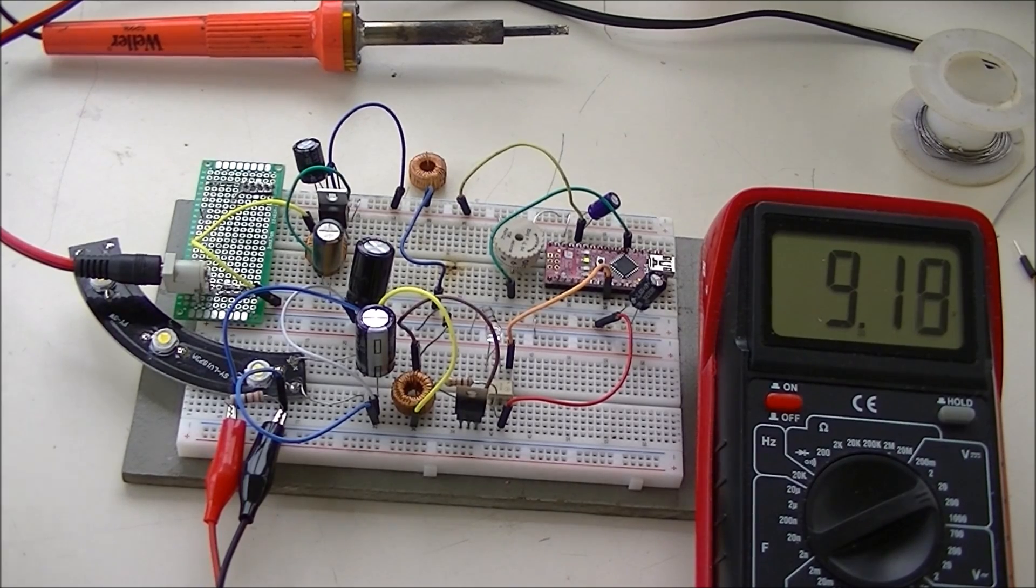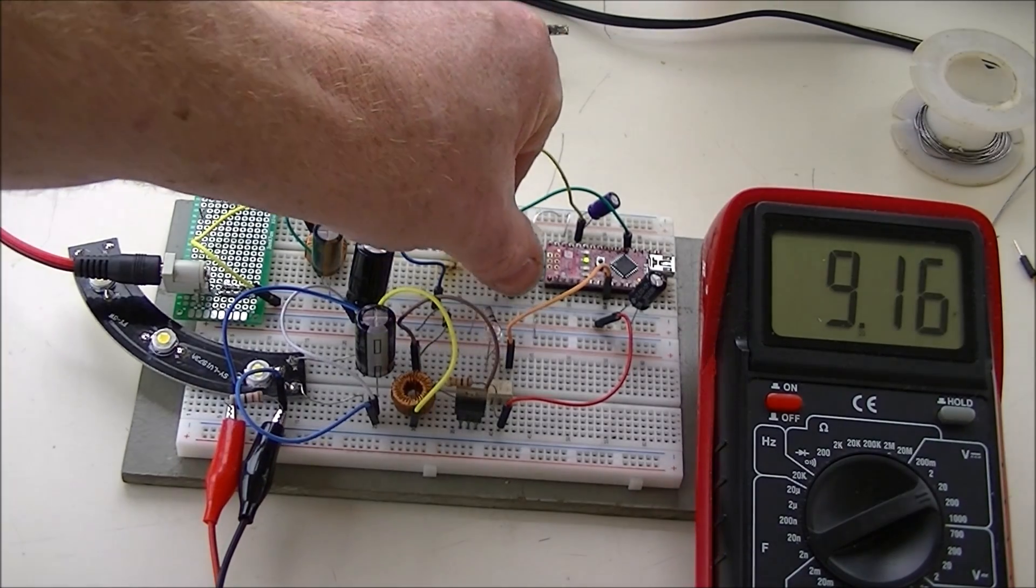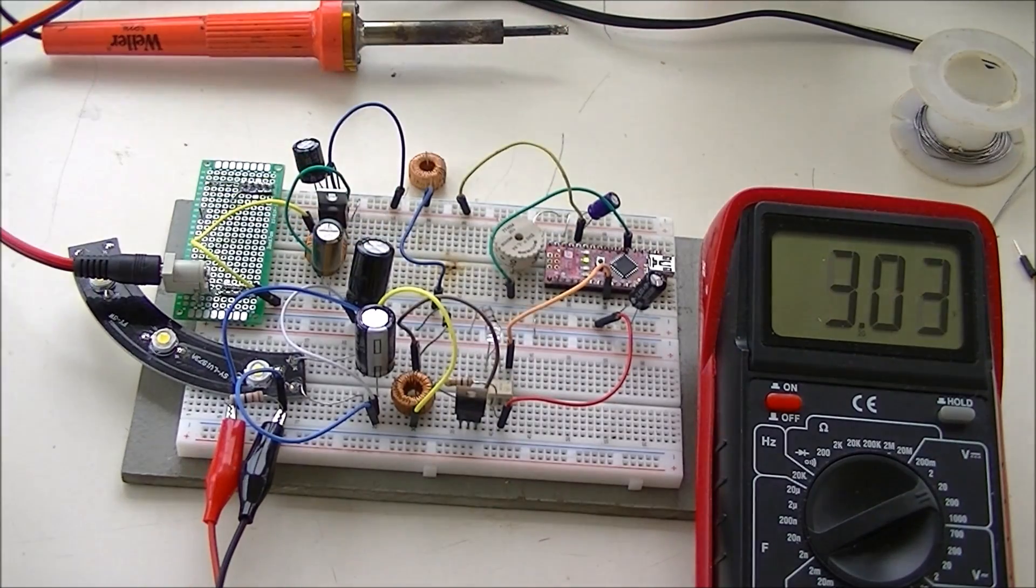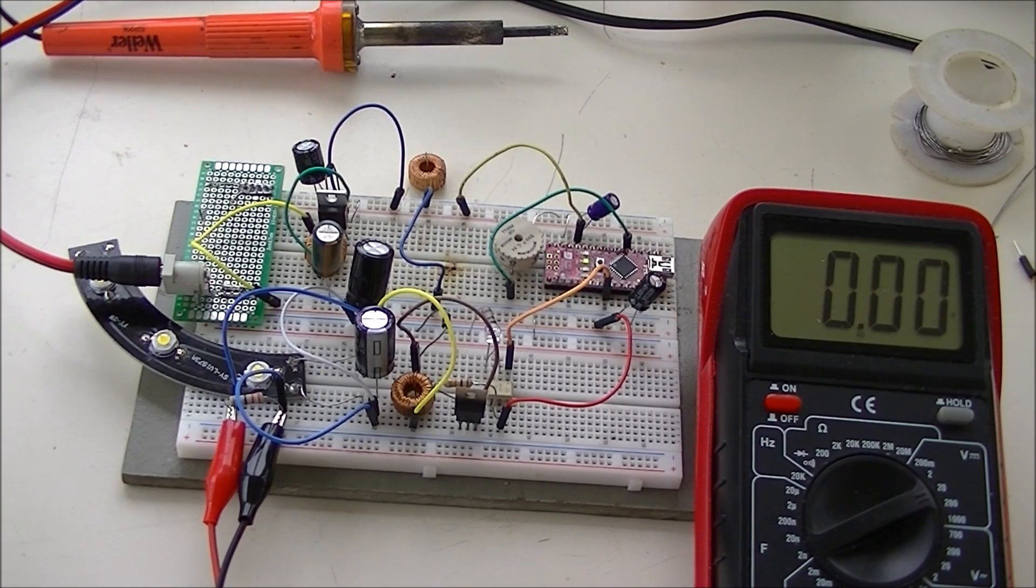If it's a relatively light load like it is here, to maintain the voltage, the duty cycle is pretty low. The heavier you load, of course, the more you're going to have to keep the transistor turned on to keep supplying energy to the circuit, and thus the wider the duty cycle.